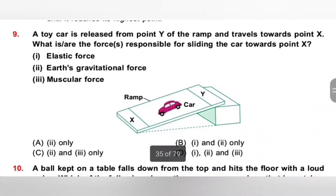Ninth one: A toy car is released from point Y of the ramp and travels towards point X. What forces are responsible for sliding the car towards point X? 1: Elastic force, 2: Earth's gravitational force, 3: Muscular force. The gravitational pull on the car is responsible for sliding it from Y to X. We are not using elastic or muscular force. Option A — 2 only — is the correct answer.